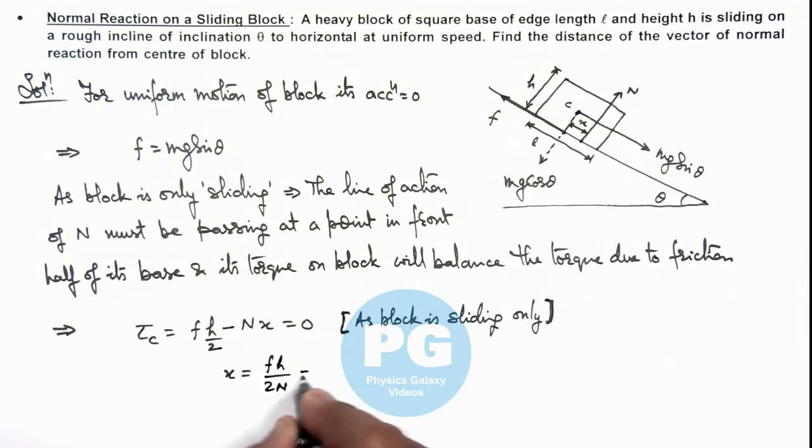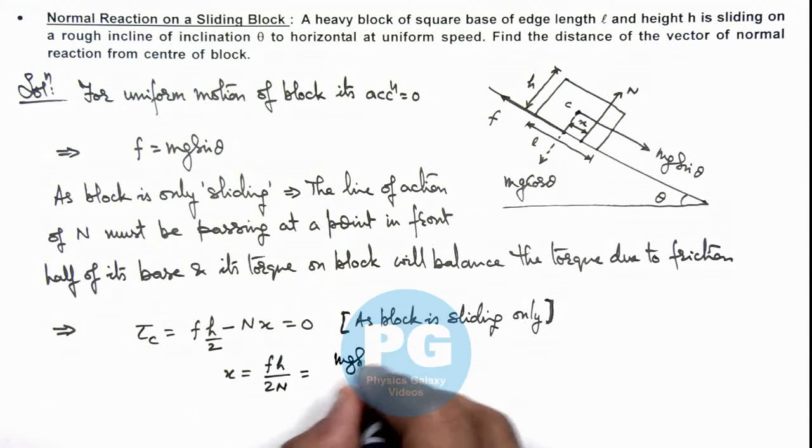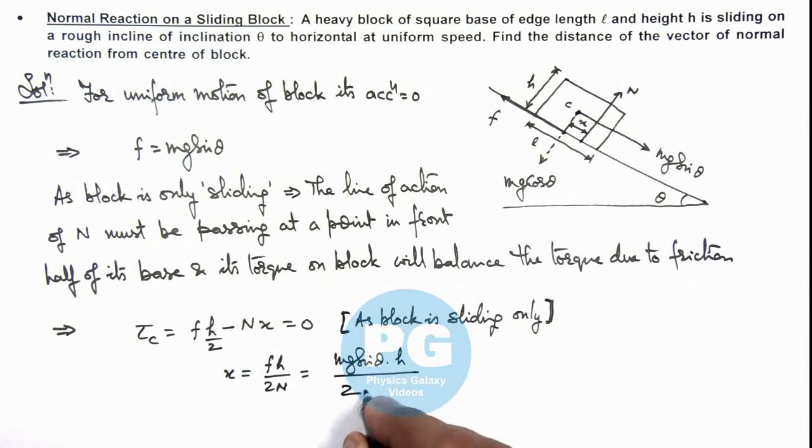And in this situation we can write the value of friction as mg sin theta, multiplied by h divided by twice of... Here the value of N we can simply write as mg cos theta.